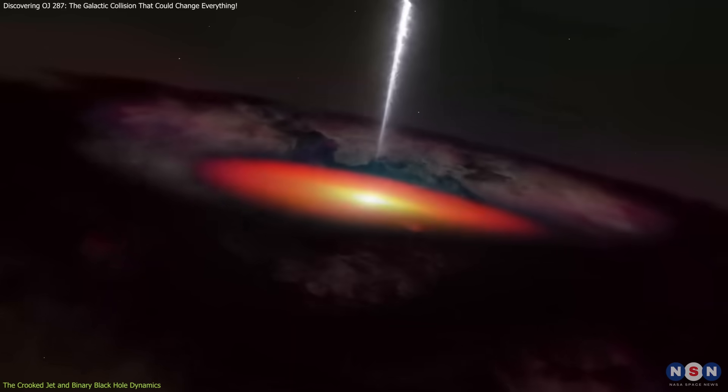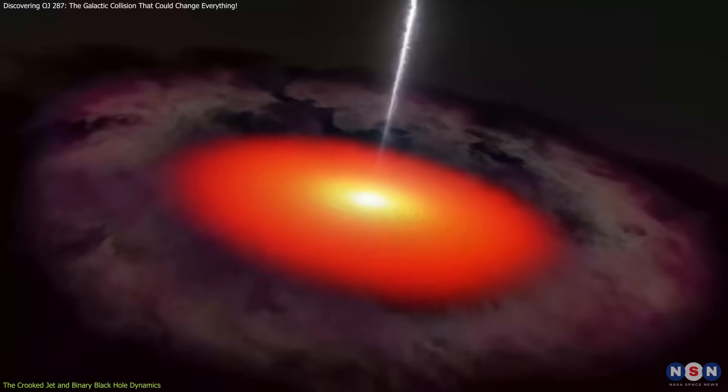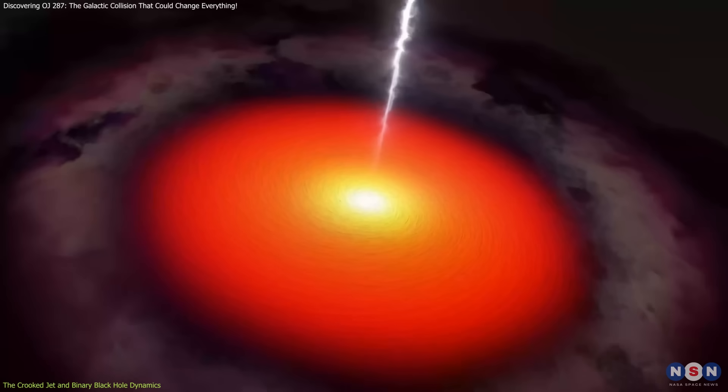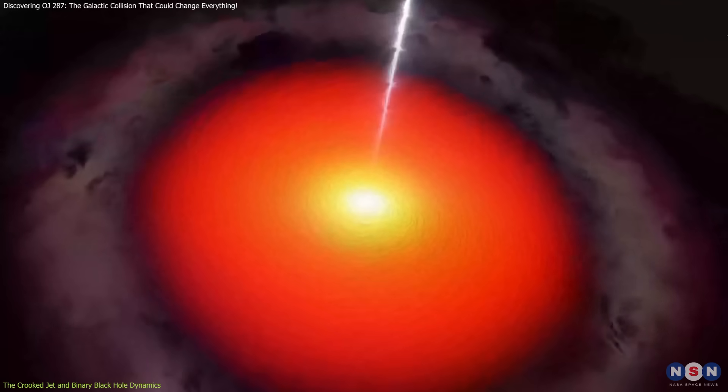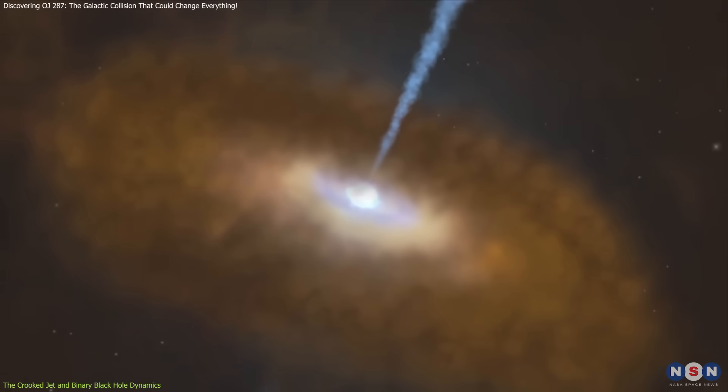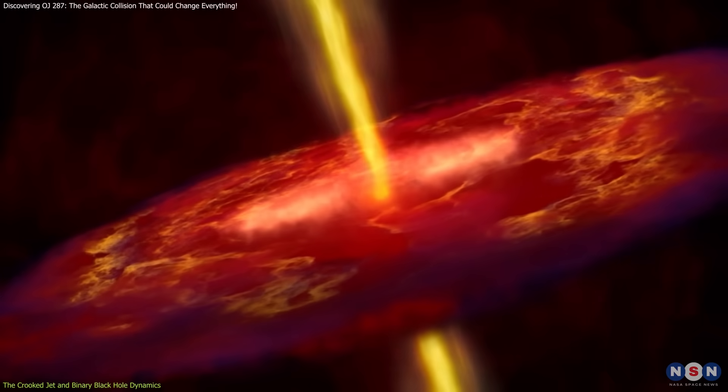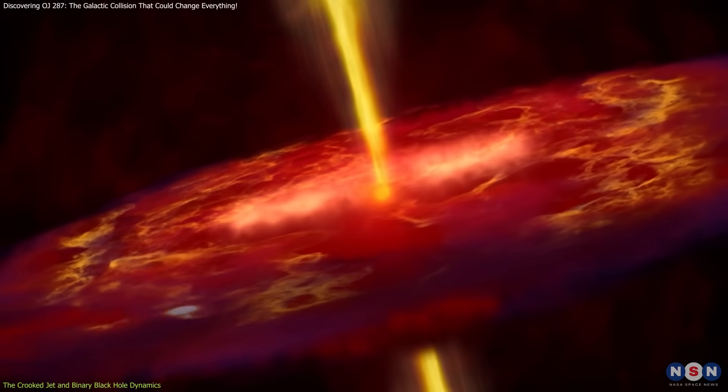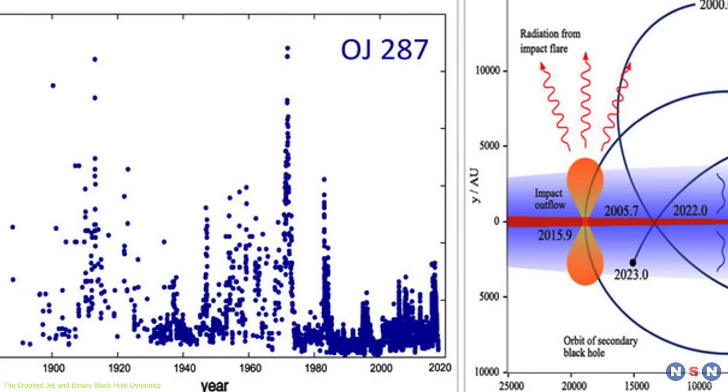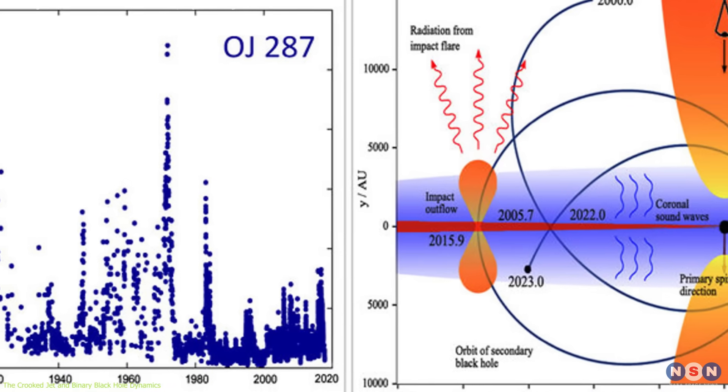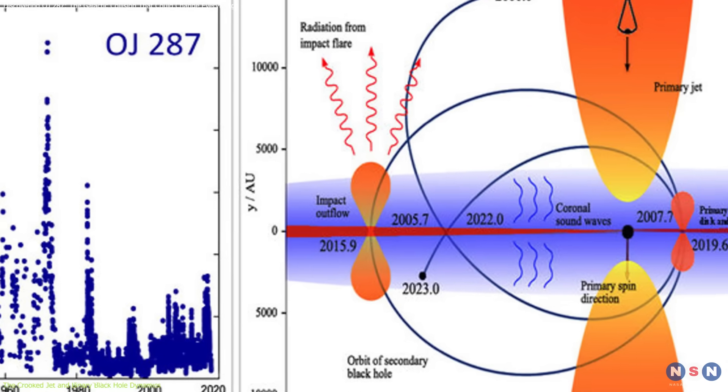OJ 287 is a blazar, which is a type of active galactic nucleus with a supermassive black hole at its center. Blazars are among the most energetic objects in the universe, and their signature jets are expelled at nearly the speed of light. However, what makes OJ 287 stand out is the unique shape of its jet.